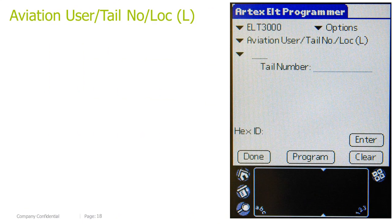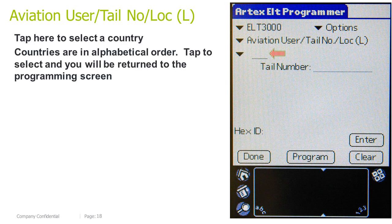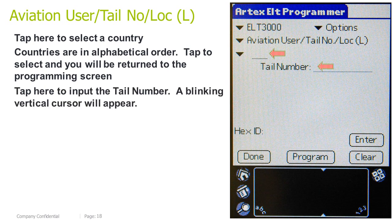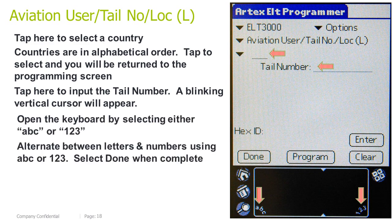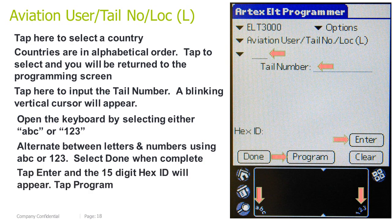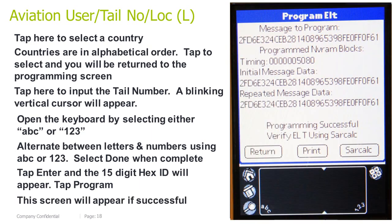Aviation user, tail number location long. Tap here to select a country; countries are in alphabetical order. Tap to select and you will be returned to the programming screen. Tap here to input the tail number — a blinking vertical cursor will appear. Open the keyboard by selecting either ABC or 123. Alternate between letters and numbers using ABC or 123. Select Done when complete. Tap Enter and the 15-digit HEX ID will appear. Tap Program. This screen will appear if successful.